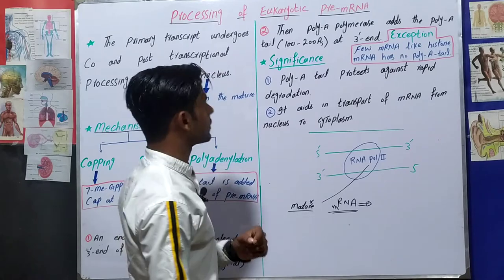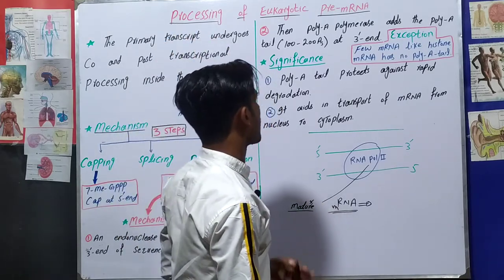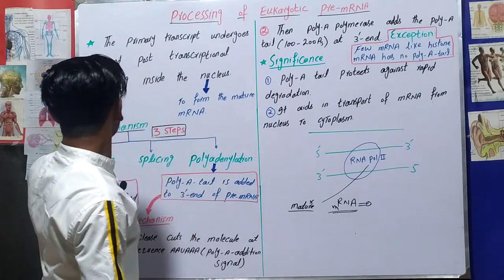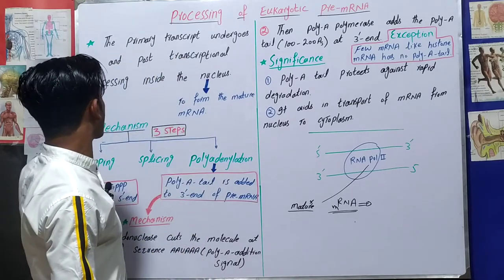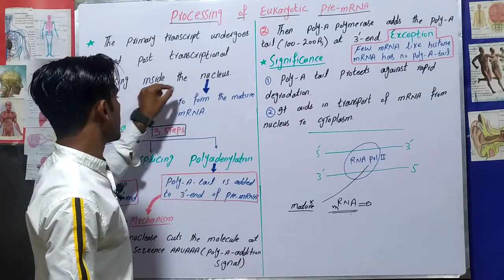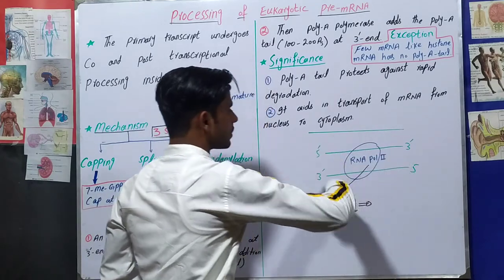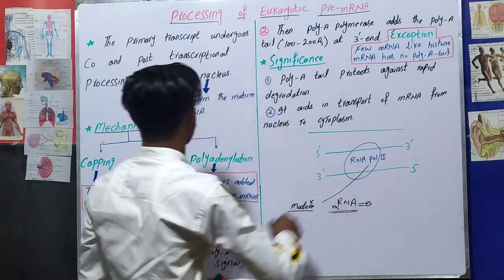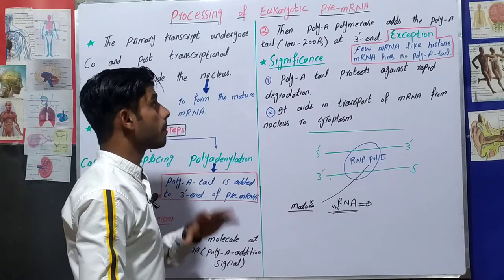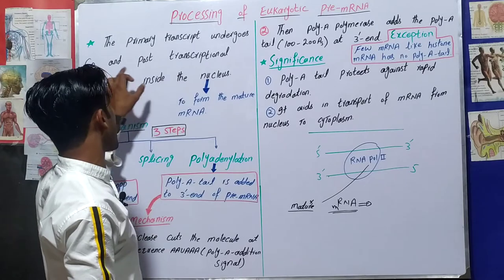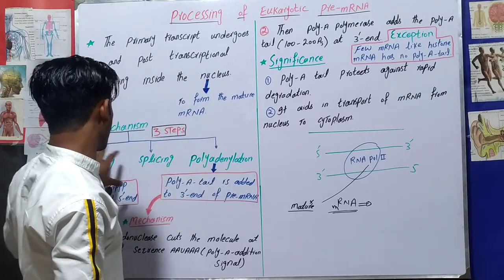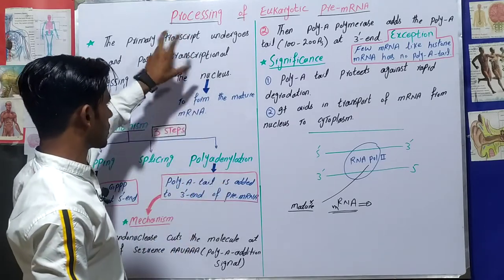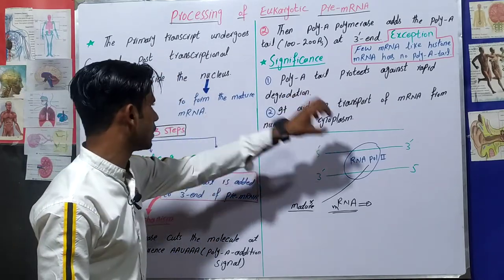This primary transcript — the pre-messenger RNA — undergoes some processing. We are going to discuss the processing of eukaryotic pre-messenger RNA, also called processing of the eukaryotic primary transcript. The primary transcript undergoes co- and post-transcriptional processing inside the nucleus. This processing is of three basic types: capping, splicing, and polyadenylation.